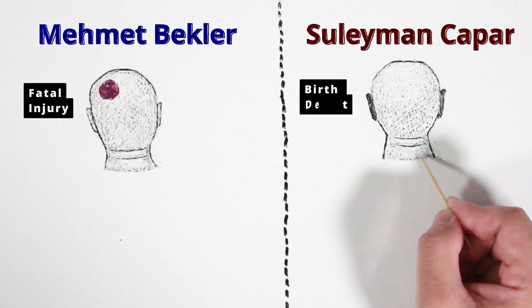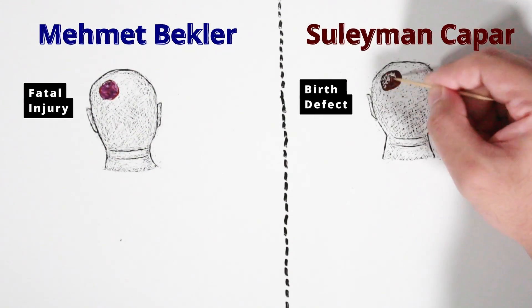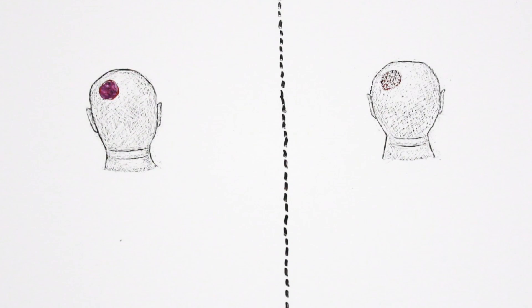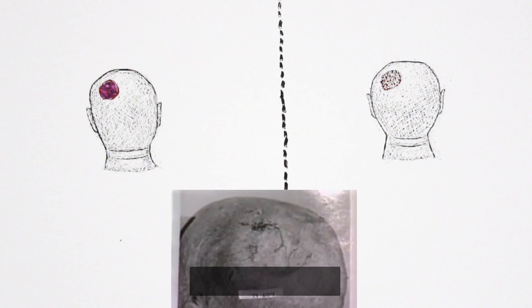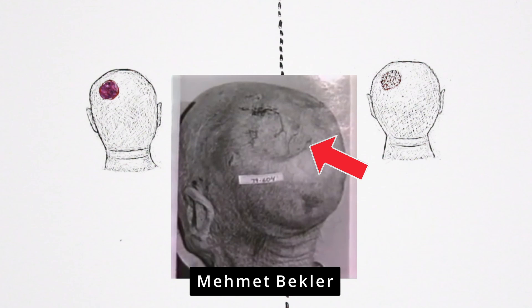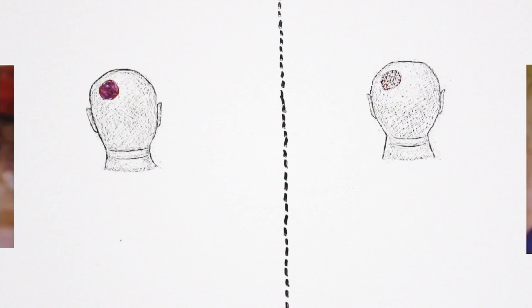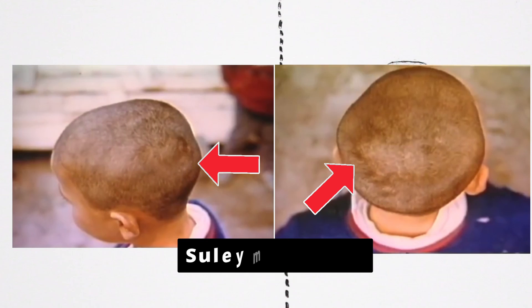It is worth noting that both Mehmet and Suleyman were bald, but I drew them with hair because I wanted to. Here is a photo of Mehmet Bekler. The top left side of the back of his head was pushed inward by a shovel. Now here are two photos of Suleyman Chapar. The top left side of the back of his head appears pushed inward. This is his birth defect.